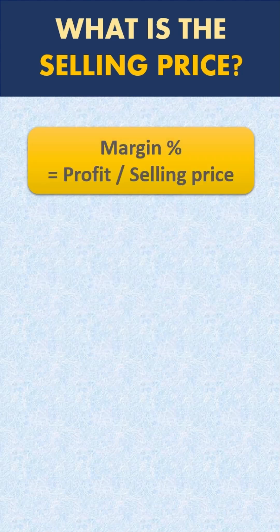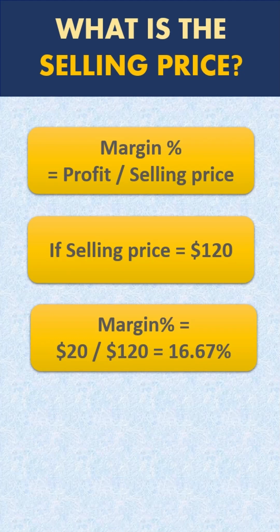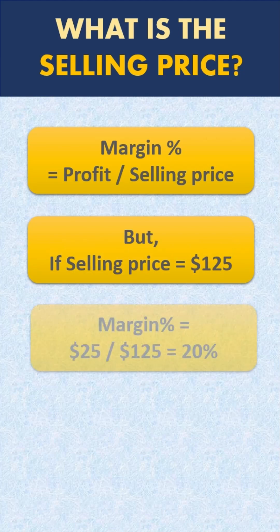Margin percentage is calculated as profit divided by selling price. So if the selling price is $120, the profit would be $20, which is 120 minus 100. And 20 divided by 120 — the selling price — is 16.67%, not the margin we are looking for. If the selling price is $125, then profit of $25 divided by selling price of $125 is 20% margin.